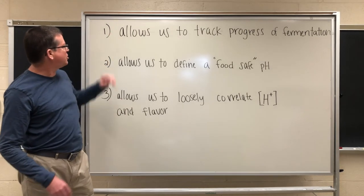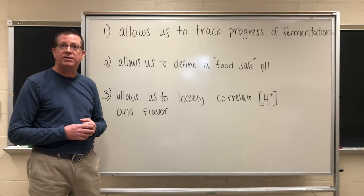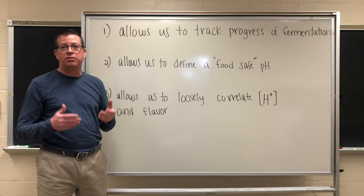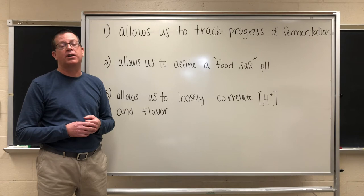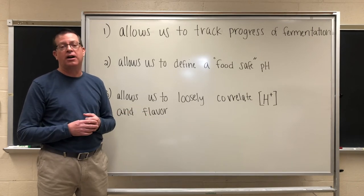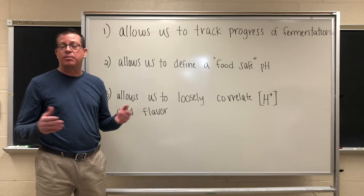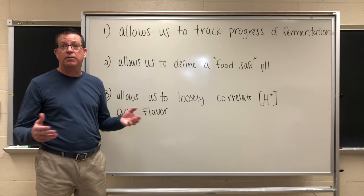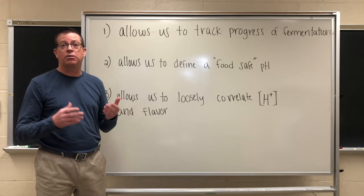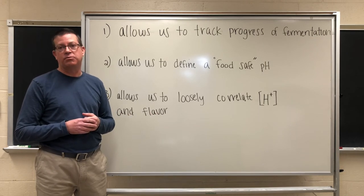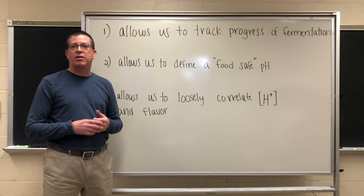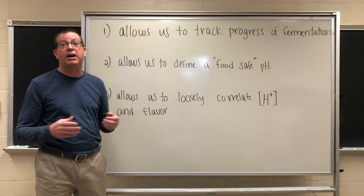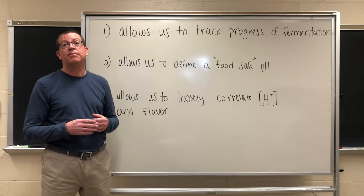The first is that measurement of pH allows us to some degree to track the progress of fermentation. In our fermentation process we're converting sugars to ethyl alcohol and also through bacterial action to organic acids which contribute to the low pH of our kombucha. As that fermentation process progresses we're going to be using up sugars and converting those to higher concentrations of acids. We should be able to track that as a decrease in pH as we move through the fermentation process. We also have a video linked below that we posted prior that goes into greater detail about the fermentation process. If you haven't seen that make sure you check that out.